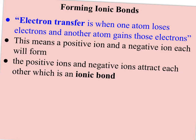This process is known as electron transfer, when one atom loses electrons and another atom gains those electrons. This means a positive ion and a negative ion will each form, and the positive ions and negative ions attract each other, which is what's known as the ionic bond.